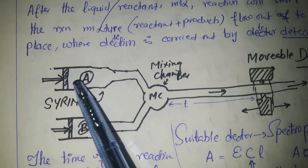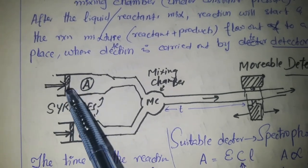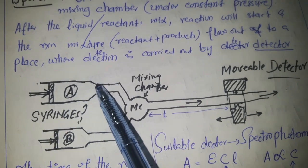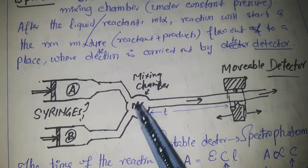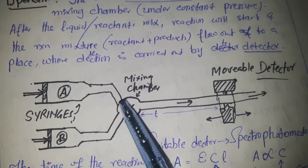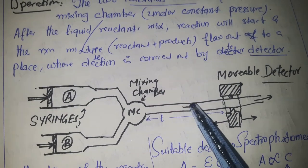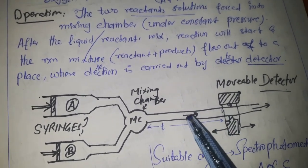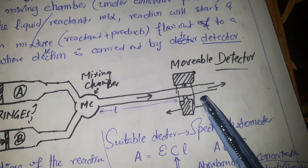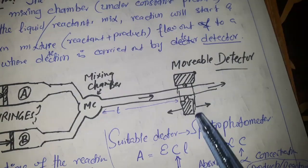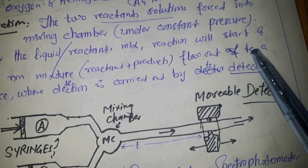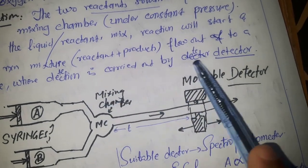In operation, two reactant solutions A and B are introduced into syringes and forced with constant pressure into a mixing chamber. In the mixing chamber they are mixed very rapidly, then flow through a tube where they are detected using a movable detector that can be positioned according to our requirements. After the liquid reactants mix, the reaction starts and the reaction mixture travels to where detection is carried out.